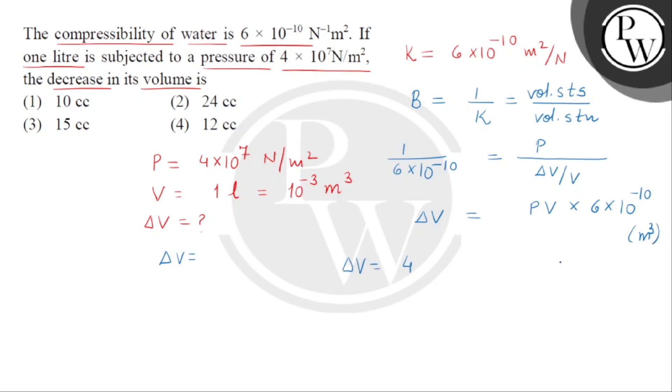Pressure is 4 × 10^7, volume is 10^-3, and it is multiplied with 6 × 10^-10. So this will be 4 × 6 = 24 multiplied by 10^-3 × 10^-3 cubic meter.